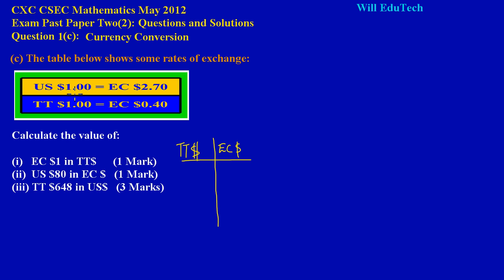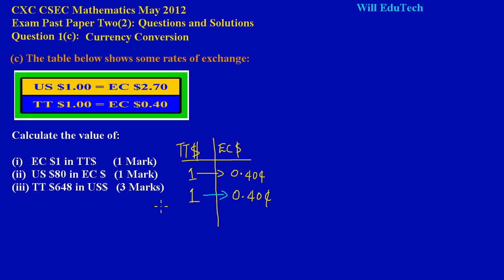Based on the rate of exchange, one Trinidadian dollar is equal to 40 cents Eastern Caribbean dollars. So in the table, one Trinidadian dollar maps onto 40 cents EC. For every 40 cents Eastern Caribbean dollars, I can purchase one Trinidadian dollar. I need to increase the right column to reach one full Eastern Caribbean dollar, so I map again: another 40 cents EC gives another TT dollar, making 80 cents EC so far.